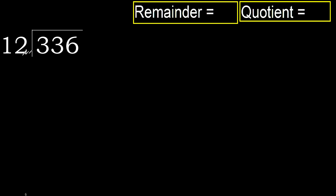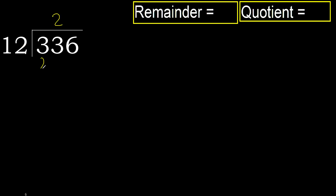336 divided by 12. 3 is less, so next: 33 is not less. With 33, 12 multiplied by which number is nearest to 33 but not greater? 12 multiplied by 3 is 36, which is greater. Multiplied by 2 is 24, which is not greater.